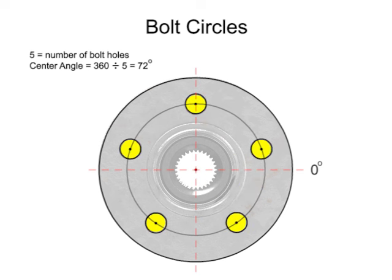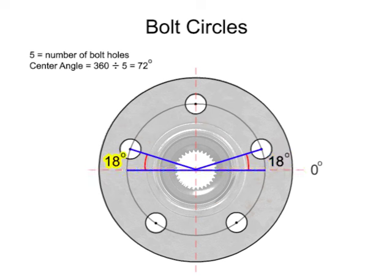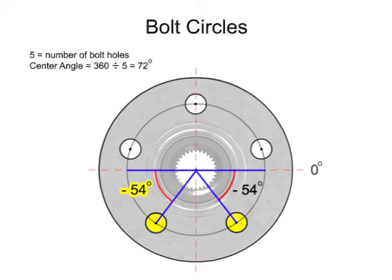Since the holes are equally spaced, the second and fifth holes are at the same angle above the x-axis. Similarly, the fourth hole mirrors the third hole and is negative 54 degrees from the x-axis.